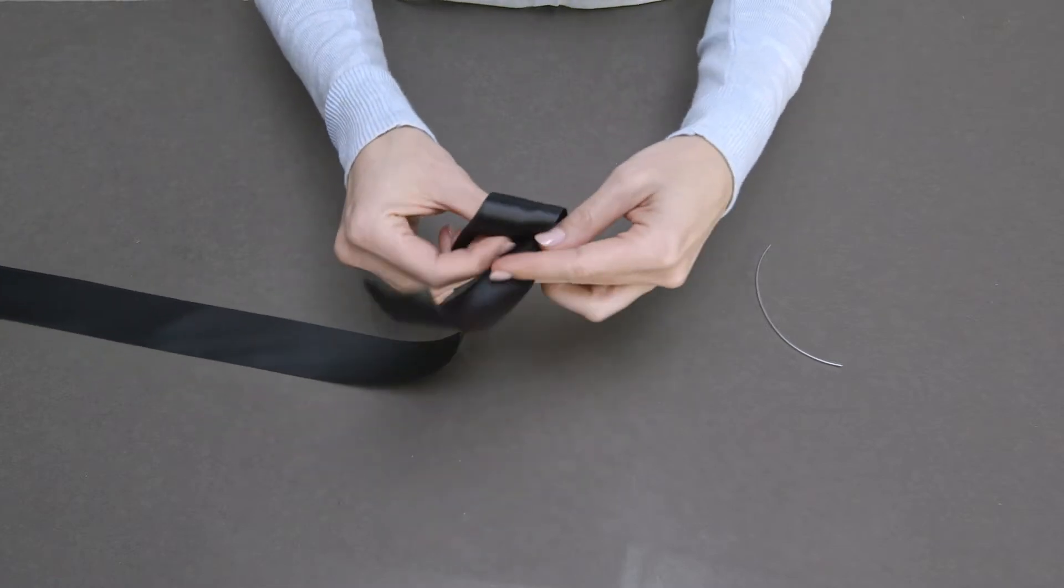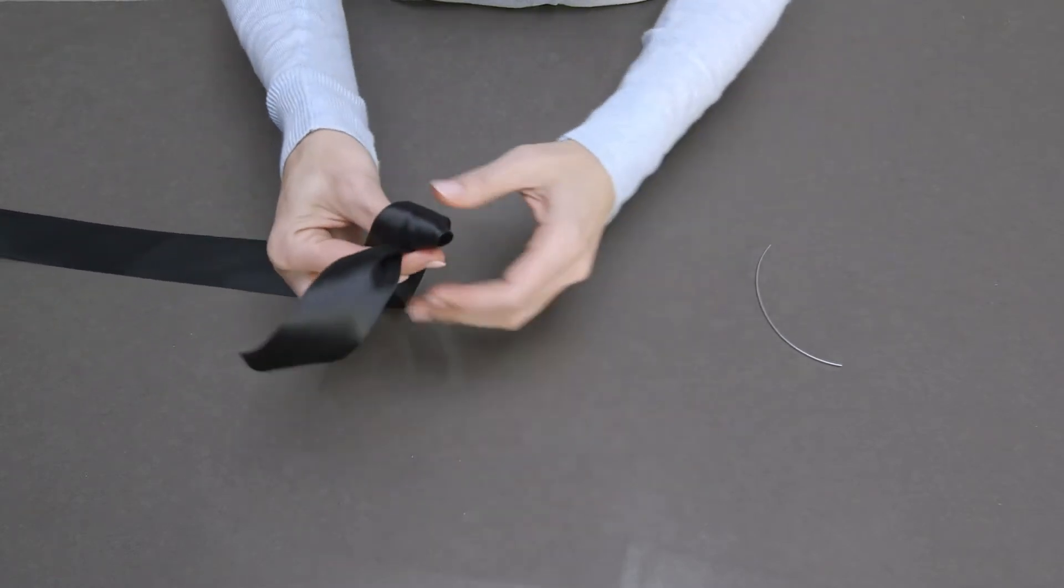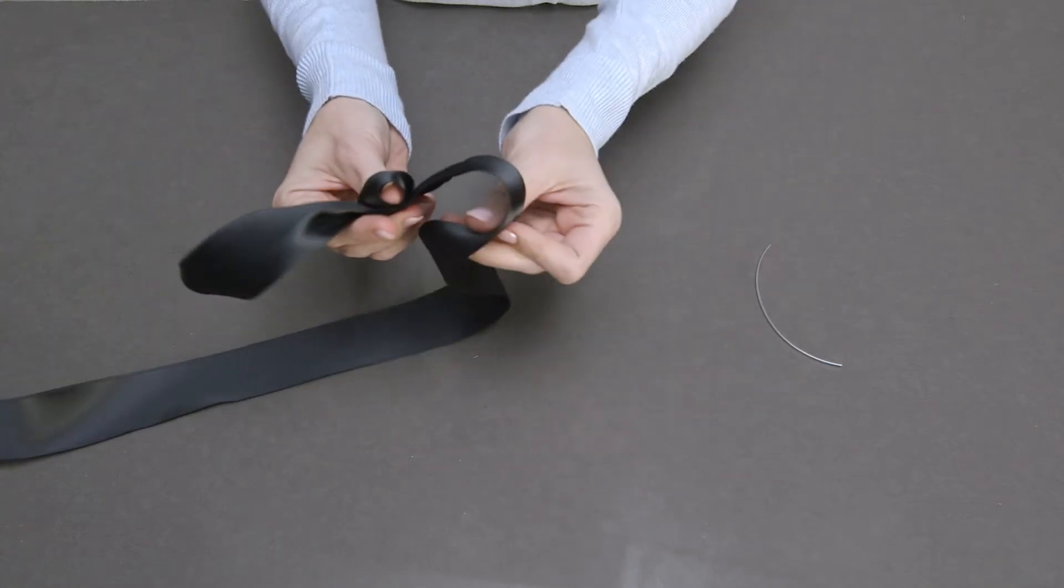Twist the ribbon to create a small loop and hold the twist between your thumb and forefinger. Using your other hand, guide the ribbon to form a loop on the opposite side from the tail.